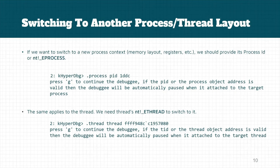There are also other ways that HyperDbg can switch to another process or another thread's memory layout — it will change the context of the debugger. For example, if you want to switch to a new process and see its registers and memory addresses, you should provide its process ID or EPROCESS structure. In this case I used .process /pid and specified the process ID in hexadecimal format and passed it to HyperDbg.